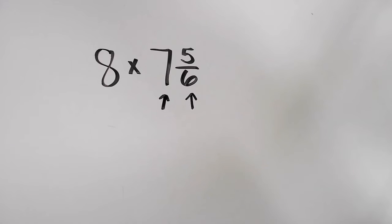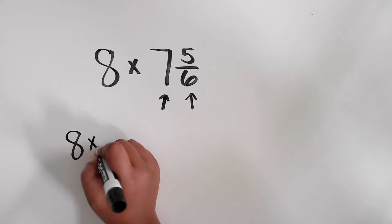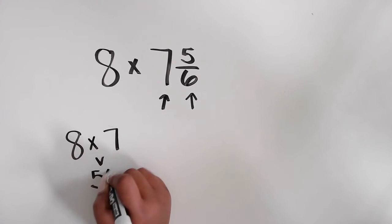7 is the whole number and 5/6 is the fraction. 8 times 7, that's the math fact, equals 56.